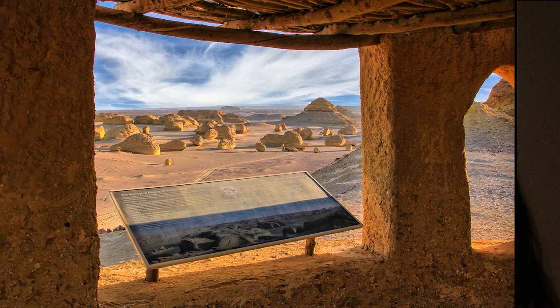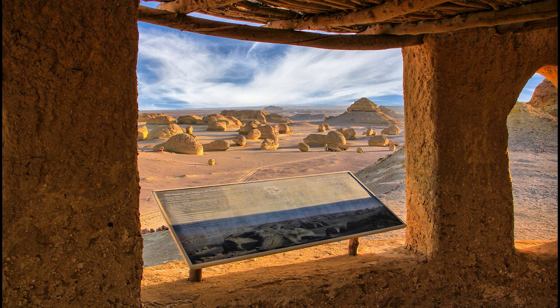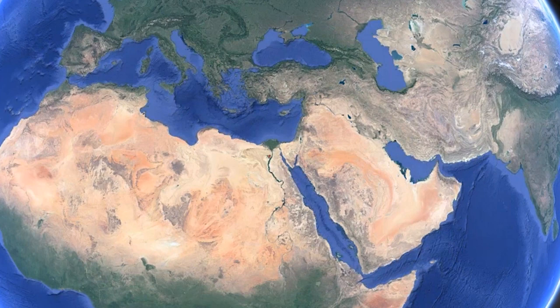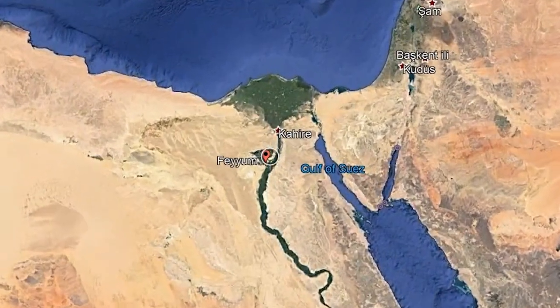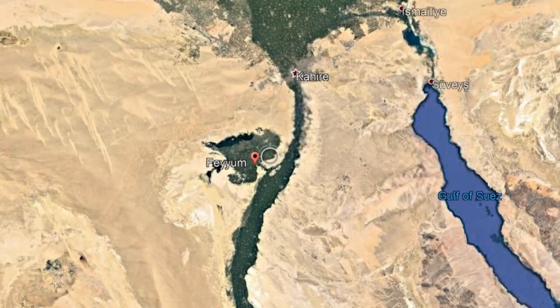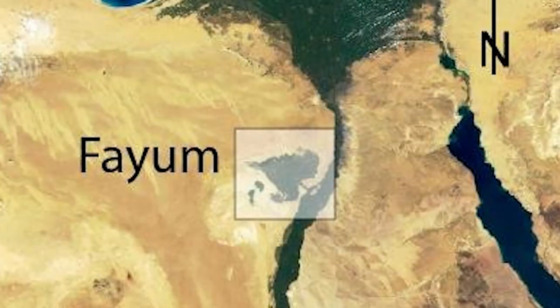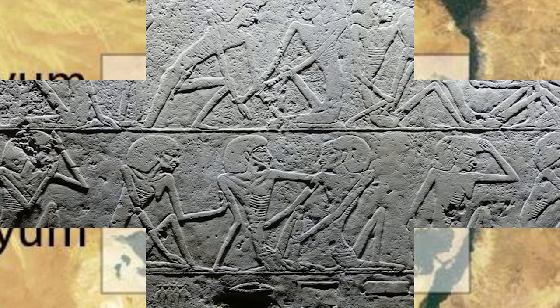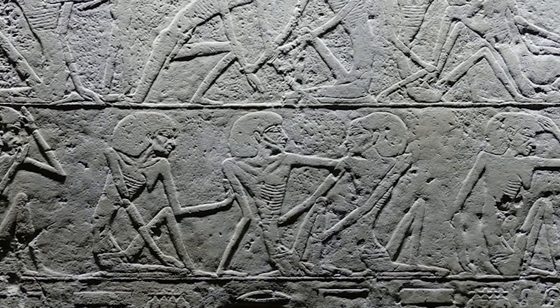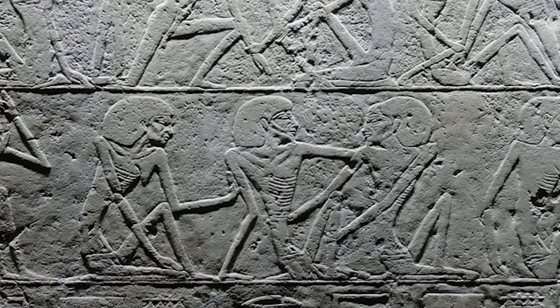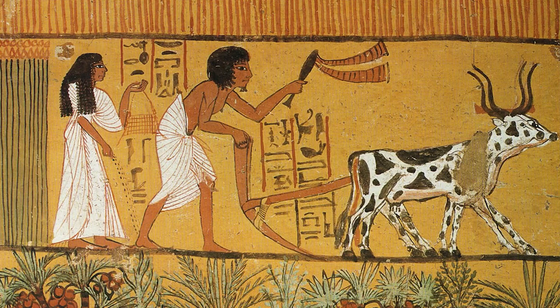These portraits are called Fiam portraits because most were found in the Fiam region of Egypt. Fiam is an area 100 km to the south of Cairo, and it does not cover a very large area — its width from east to west is around 60 km. The ancient Egyptians called this area Merar, the Great Lake. Despite the low population and limited irrigation, the earliest food production experiments in Egypt, namely agriculture experiments, were made in Fiam.